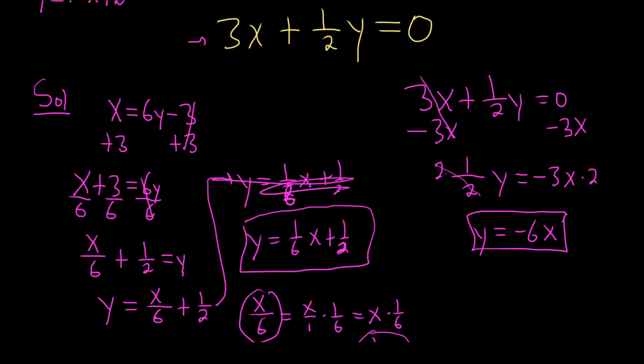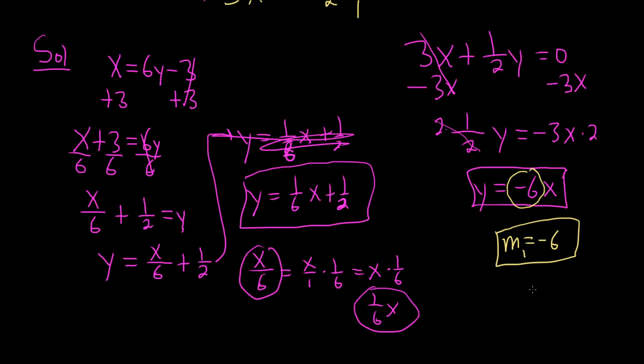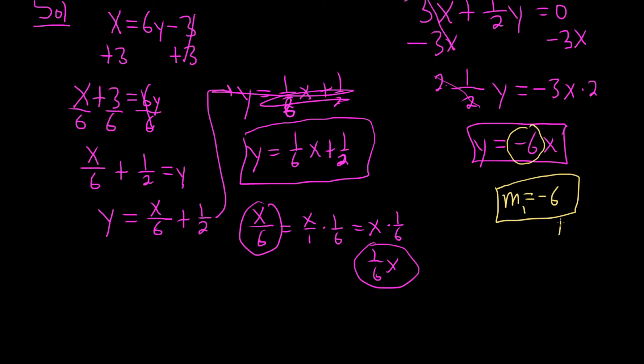Now we can figure out if these are parallel, perpendicular, or neither. Notice the slope is the number in front of the x, so it's negative 6 - I'll call this m1. The lines are perpendicular if when you flip the slope and put a negative sign, you get the other one.